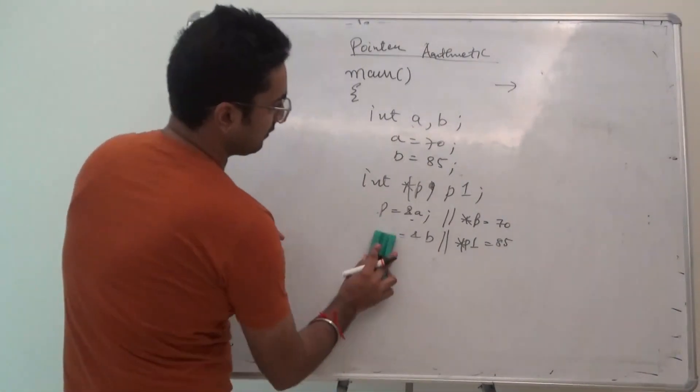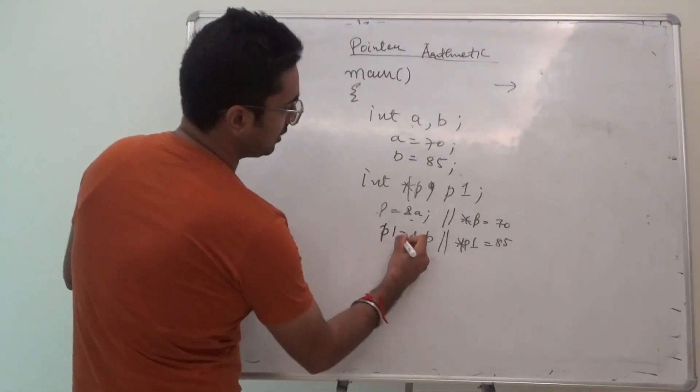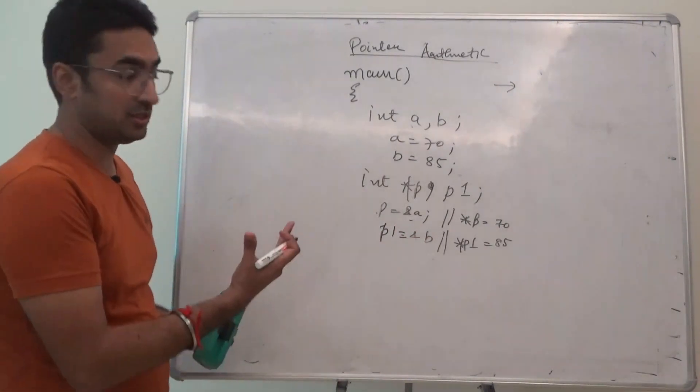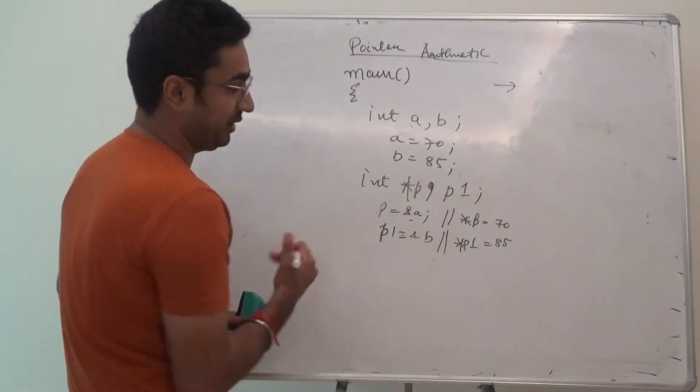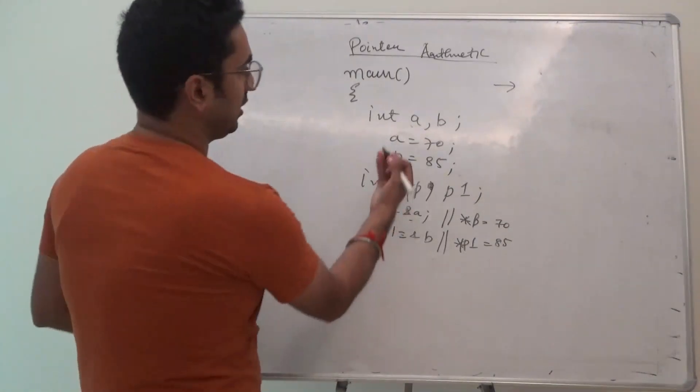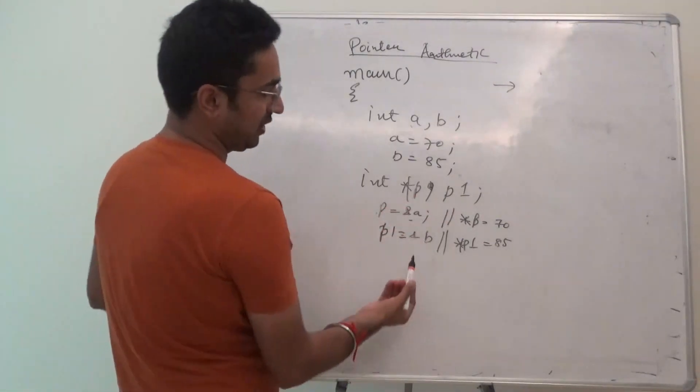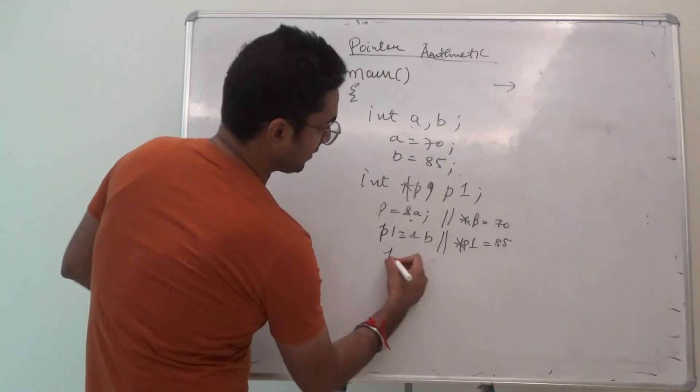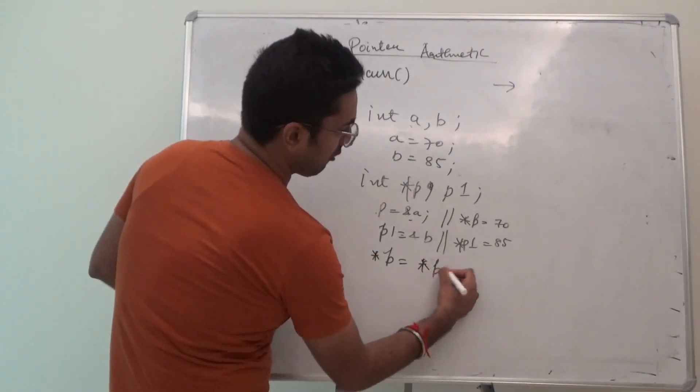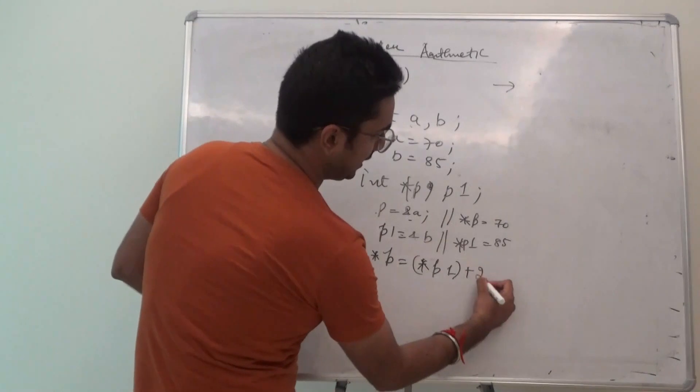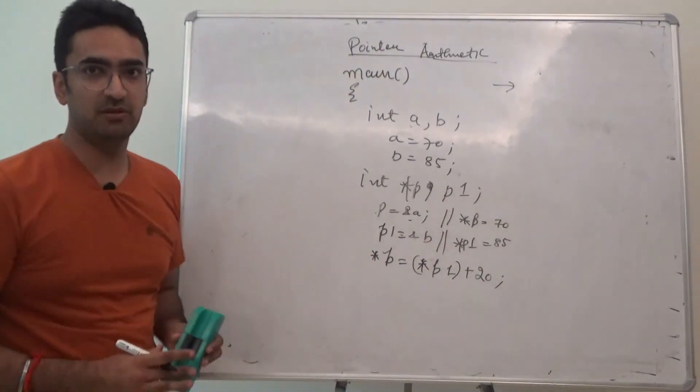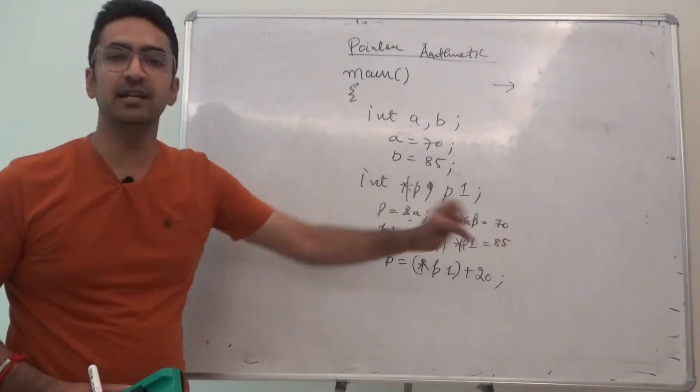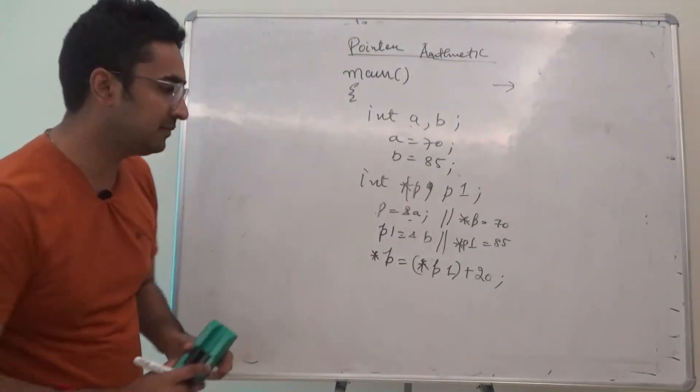So, how the accessing is done, we are continuing with this example. I want everyone to pay attention to this important point that I am going to make. The point is that p and p1 are there. Can I assign star of p is equal to star of p1 plus 20? Definitely possible, why? Because star of p is integer value, star of p1 is also integer, integer integer can be added, possibility is there.